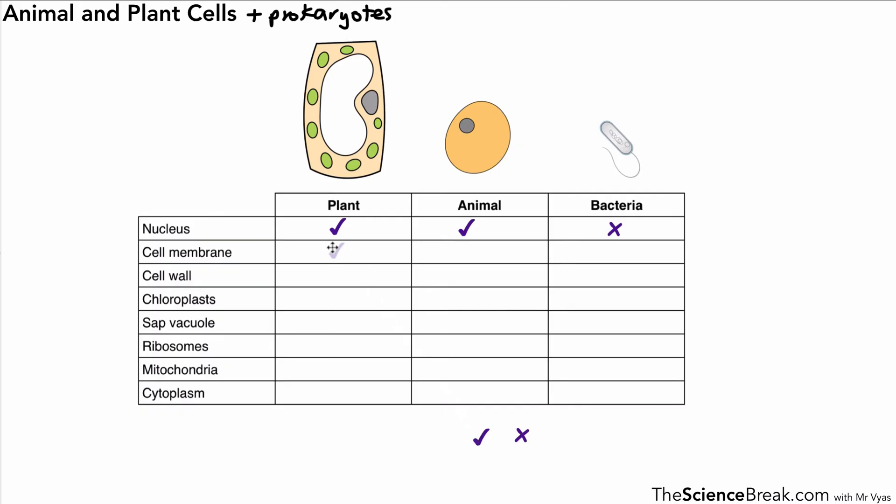What about our animal cell? We have a cell membrane. We do not have a cell wall or chloroplast, nor do we have a sap vacuole, but we have the other three parts: the ribosomes, mitochondria, and cytoplasm.